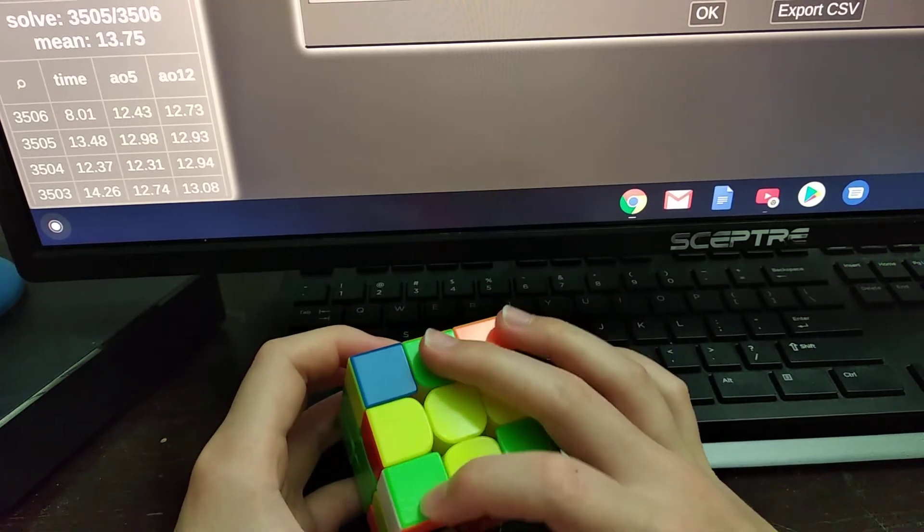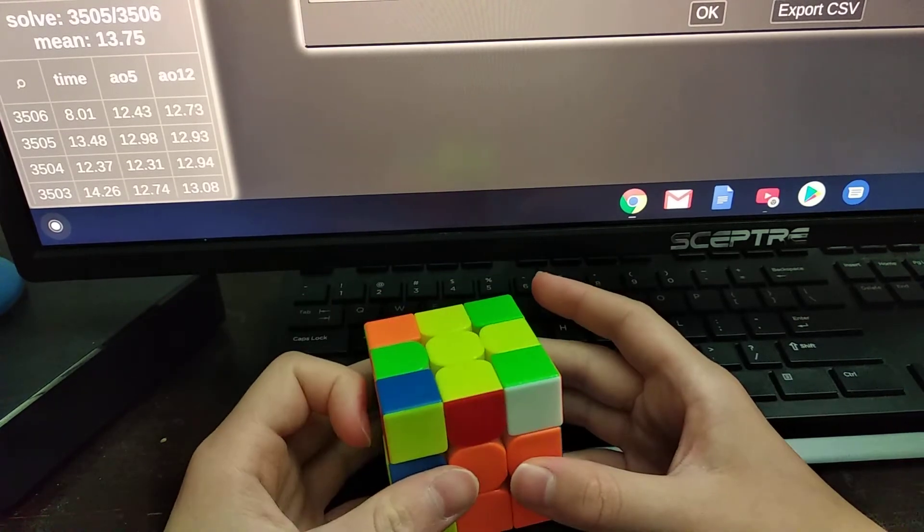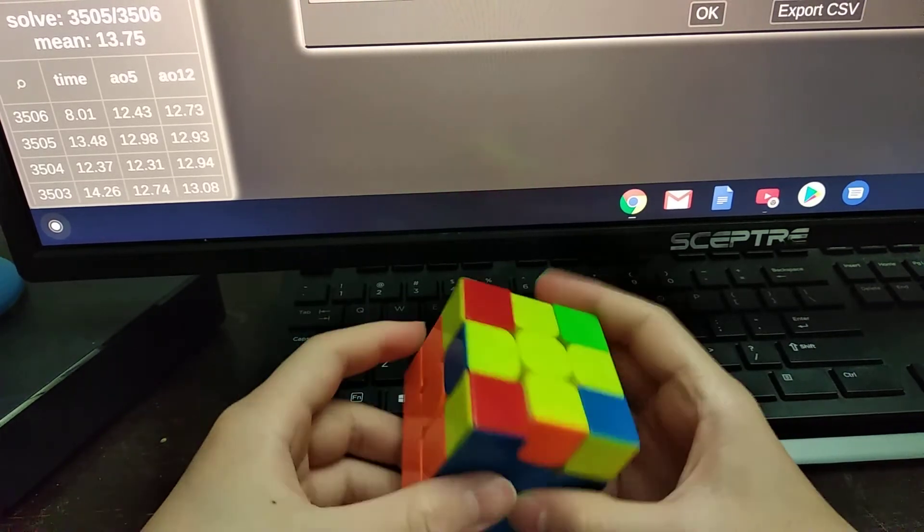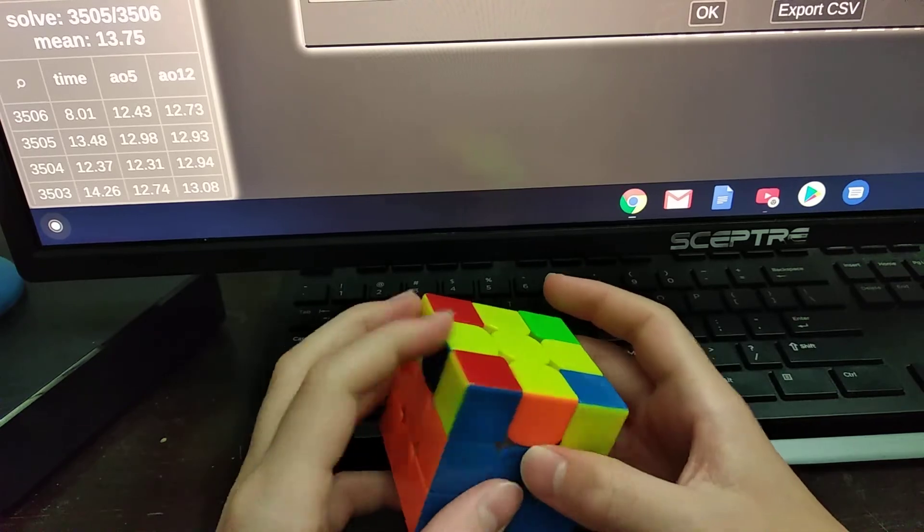And then here I have green and orange, so then I did a U' and I rotated, paired them up, and inserted to the back.